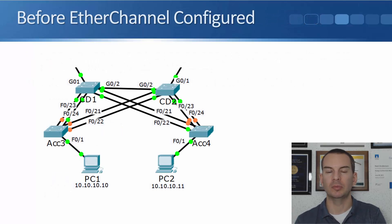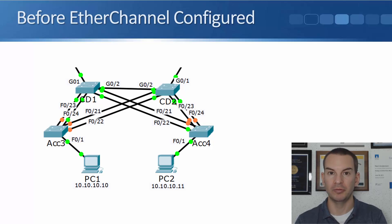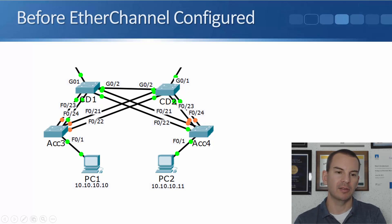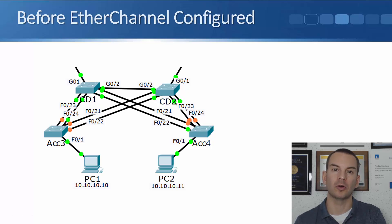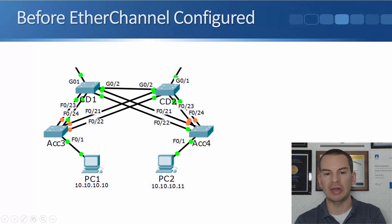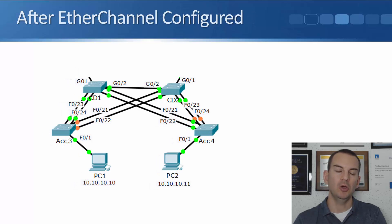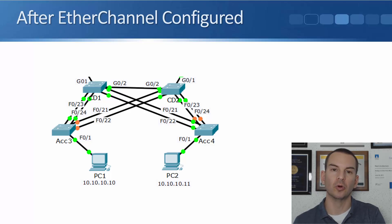We configured that same topology in the lab in the last lecture. Things were better after we configured EtherChannel — this is how it was before. CD1 is the root bridge and from Access 3 it had four physical uplinks but only one of them was forwarding traffic — the interface connected to CD1 — and exactly the same on Access 4. Four physical ports, only one forwarding traffic. After we configured EtherChannel, two out of the four are now forwarding rather than one, so it's better.